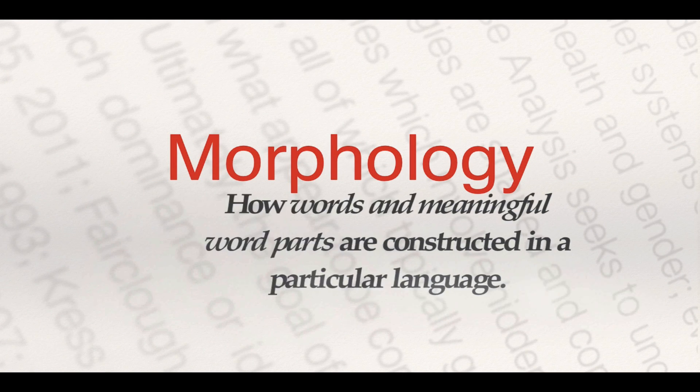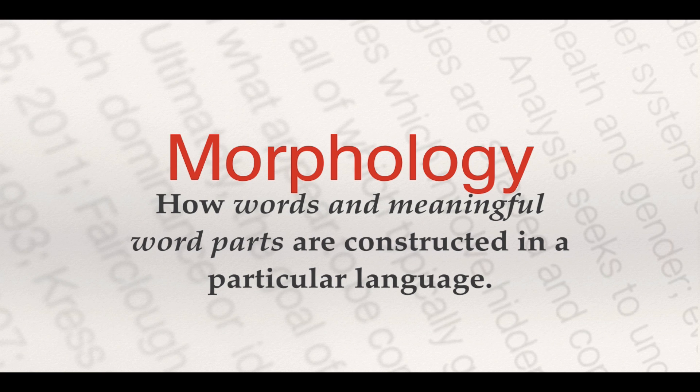The next part is morphology, and that's how words and meaningful word parts are constructed in a particular language. So we can have, for instance, word parts that are things like prefixes or affixes. So 'unionism' in English has one particular meaning. If we add on a prefix like 'anti' — anti-unionism — that completely changes the entire way that the word is put together. And there's lots of more nuanced ways that we can actually put words together as well.